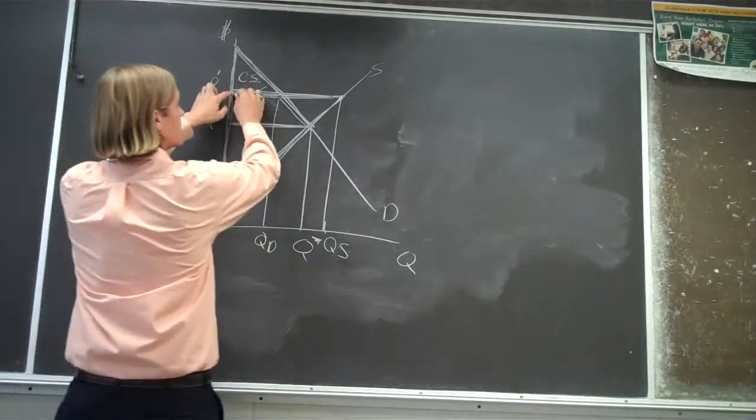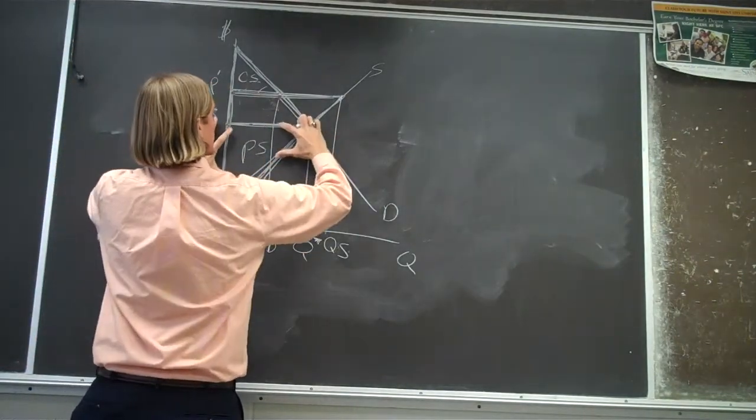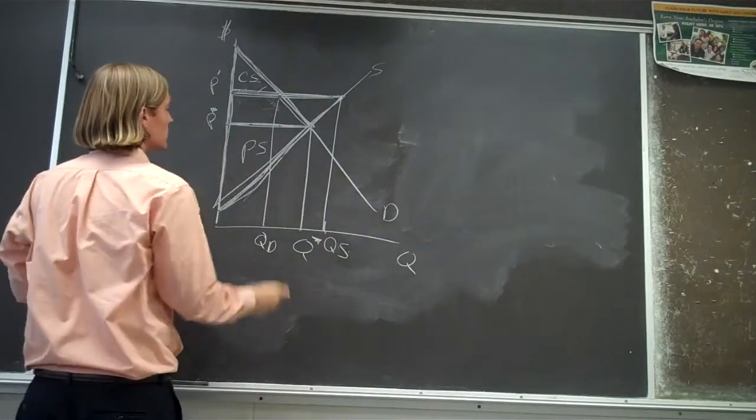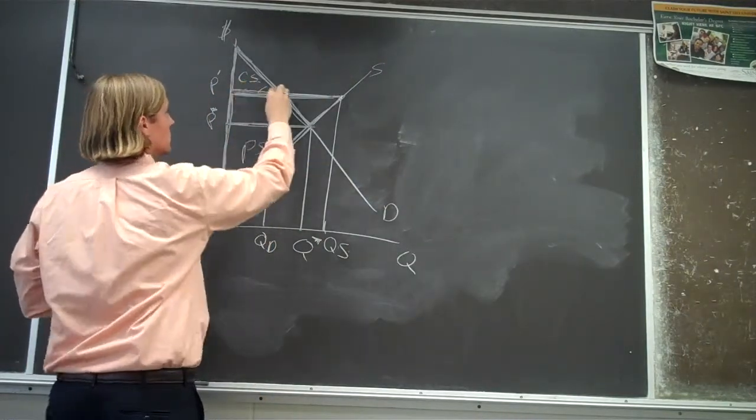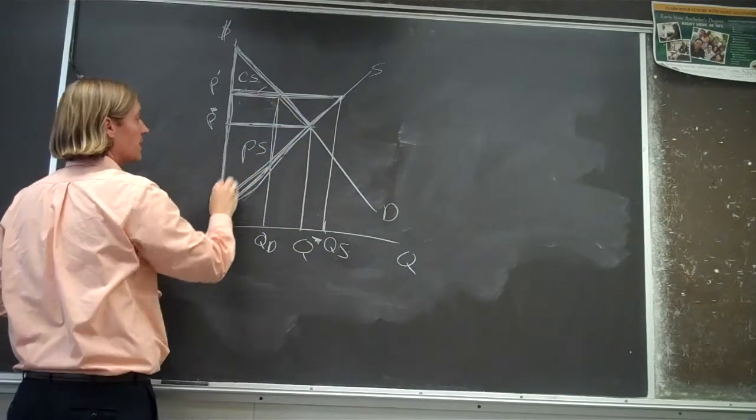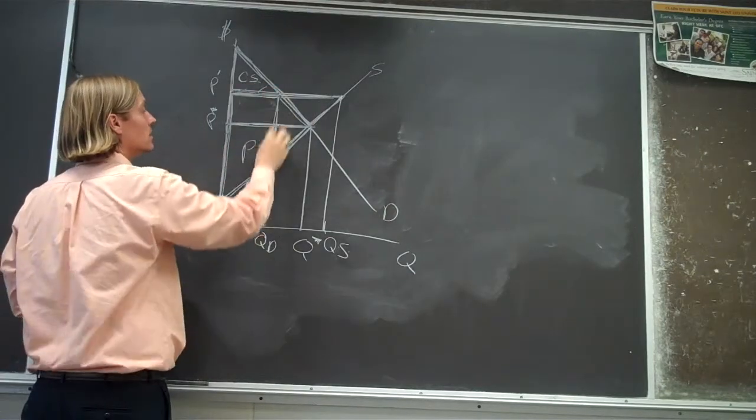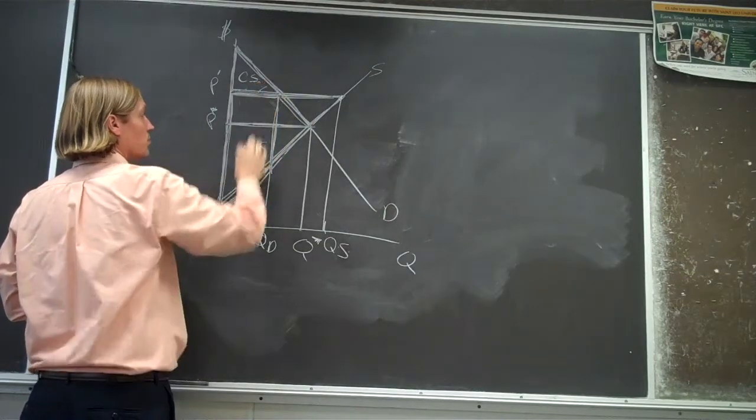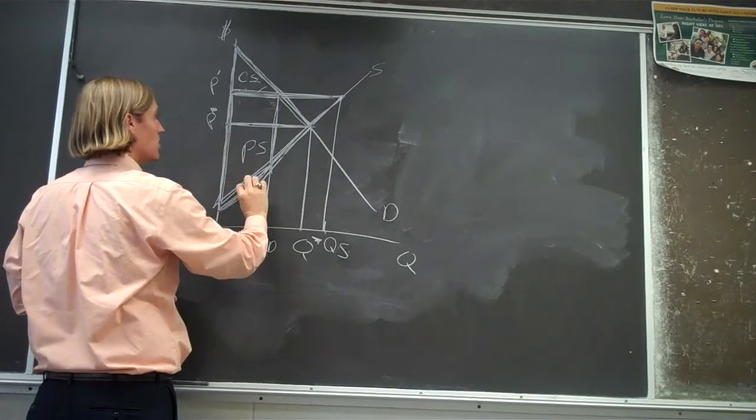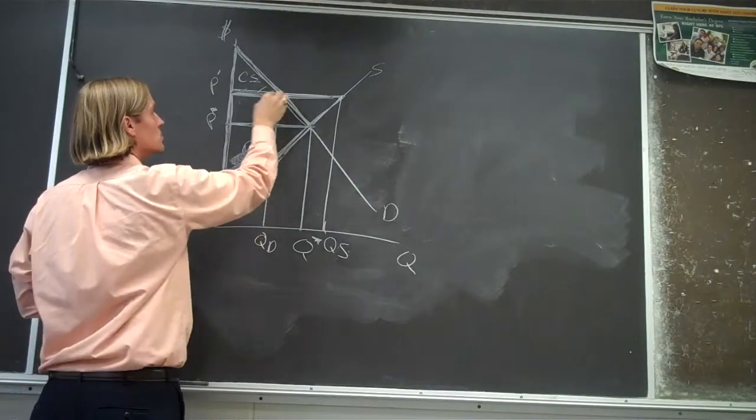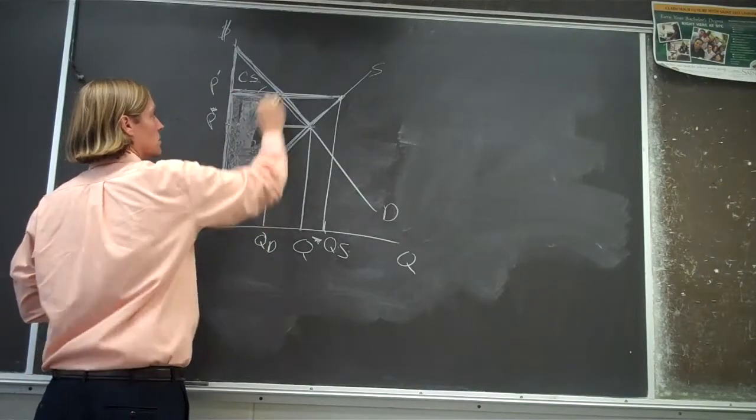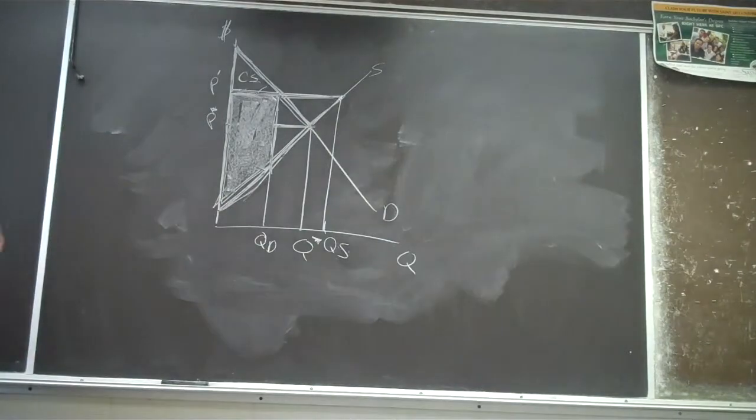And so instead of increasing from this triangle to this much larger triangle, they've gone from this triangle to this area. So again, it's the area below the price and above the supply curve. So the new producer surplus is this area.